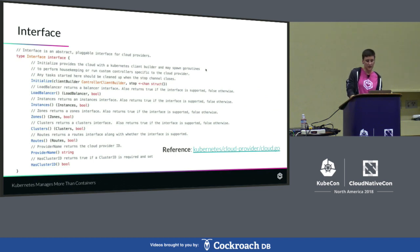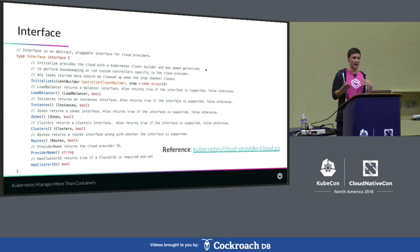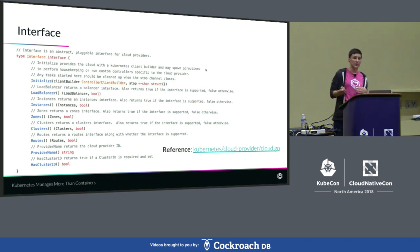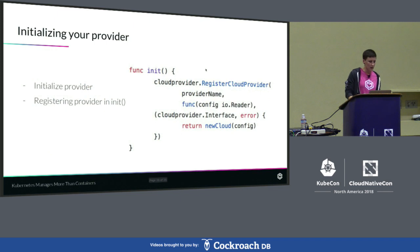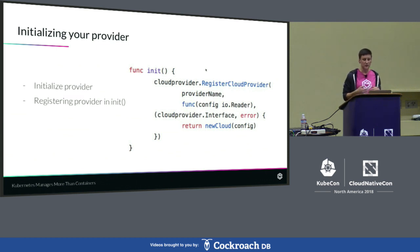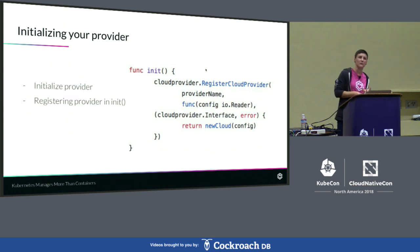This is an interface that you would implement in each of these pieces. For the load balancer, you would return another interface that it implements and a Boolean value. If you don't want to implement that interface, you just return false. If you want to implement it, you return true along with the interface that you are implementing. To initialize your provider, you are going to want an init block in that main source code that you're importing with the underscore, and that registers your cloud provider with your provider name so it knows about it. You're going to return that cloud provider interface that you have implemented with the information about the other interfaces that you have decided to implement.